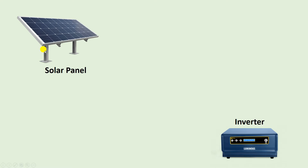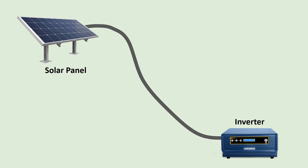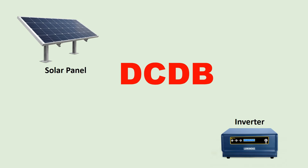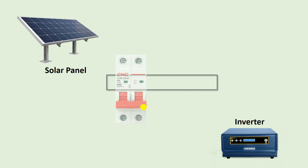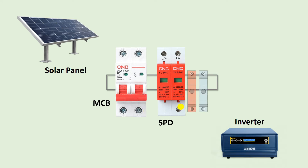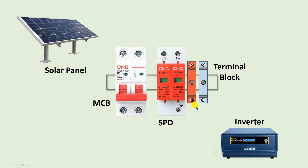Friends, if you do connection of solar panel in your home, at the time of connection you connect power supply of solar panel directly with inverter — but you should not do this. What you have to do is connect the power supply from the solar panel with a DC DB. Inside the DC DB, you have to connect a MCB, after this one SPD, and after this two terminals.